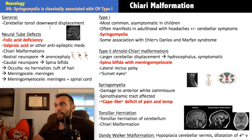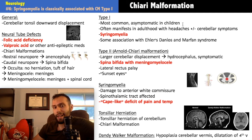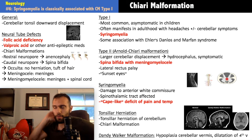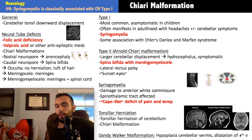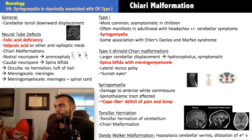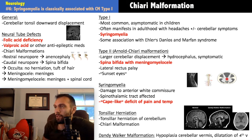There are many Chiari variants, but the two important ones are Type 1 and Type 2. Type 1 is the most common, often asymptomatic in children, and typically manifests in adulthood with headaches and cerebellar symptoms. It results from poor formation of the posterior fossa from congenital or acquired disorders — hydrocephalus, neurofibromatosis, vitamin D-resistant rickets. High yield: its association with connective tissue diseases, particularly Ehlers-Danlos and Marfan syndrome.